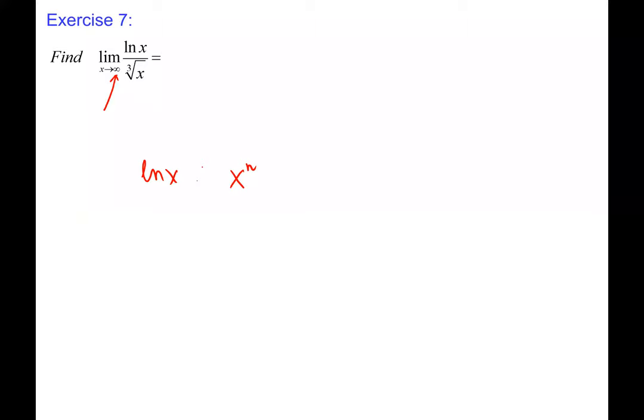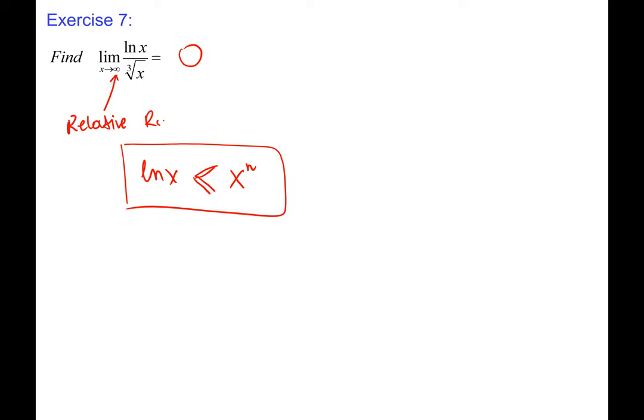Another limit at infinity: ln(x) / x^(1/3). Power functions always grow faster than logarithmic functions. Since x^(1/3) is a power function and ln(x) is logarithmic, the denominator is winning and the limit is 0.